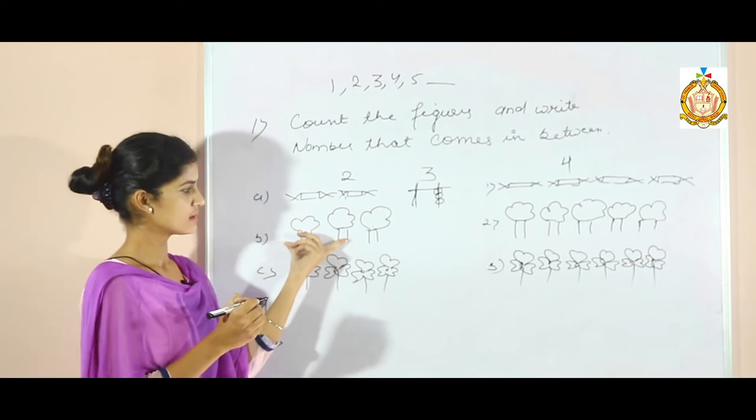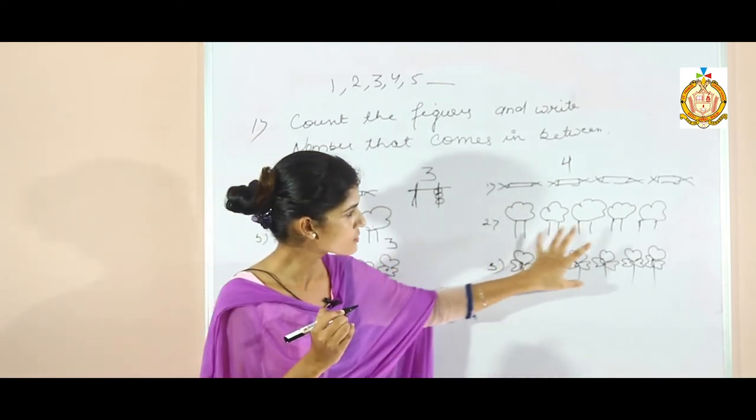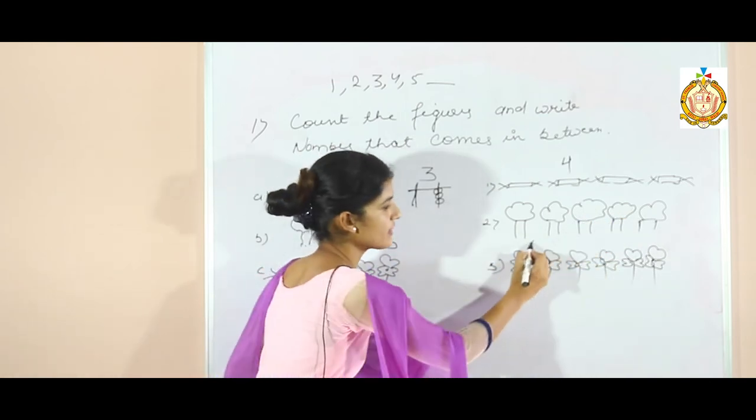How many trees are there? 3. Write here, 3. How many are here? 1, 2, 3, 4 and 5. Write 5. Here.